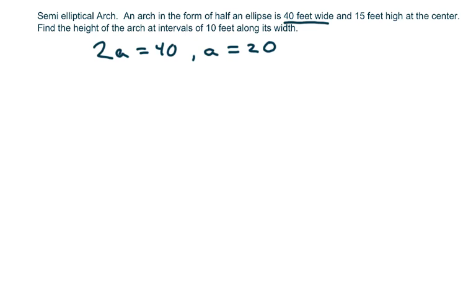since the height is 15, we have b equals 15. Remember, we only have half of an ellipse, so we only have half. So if this is 15, then this would be 20 on this side and 20 on that side.